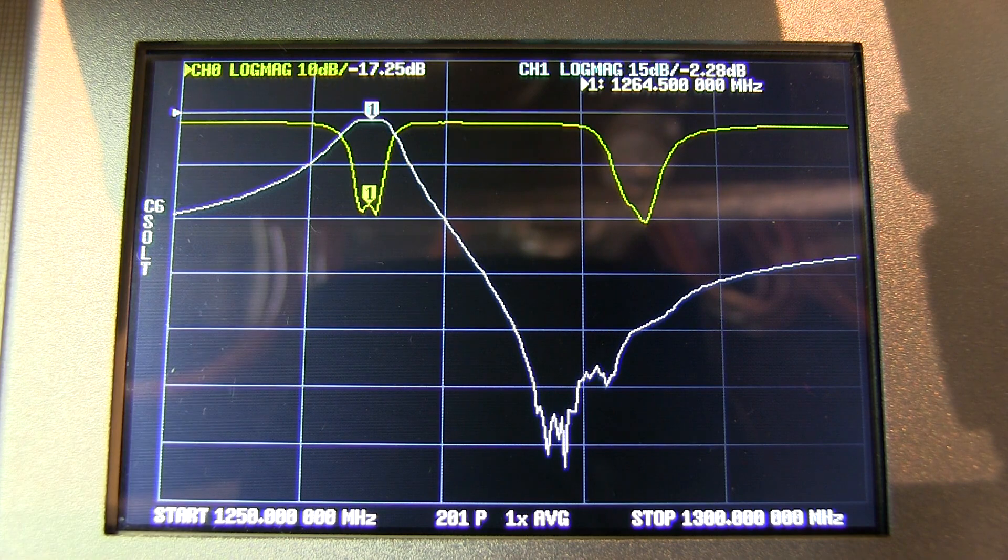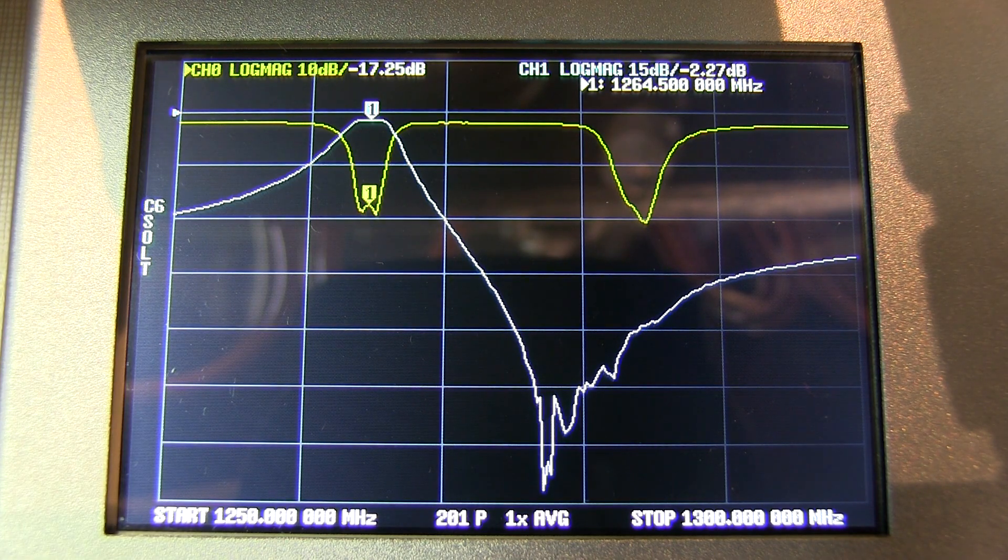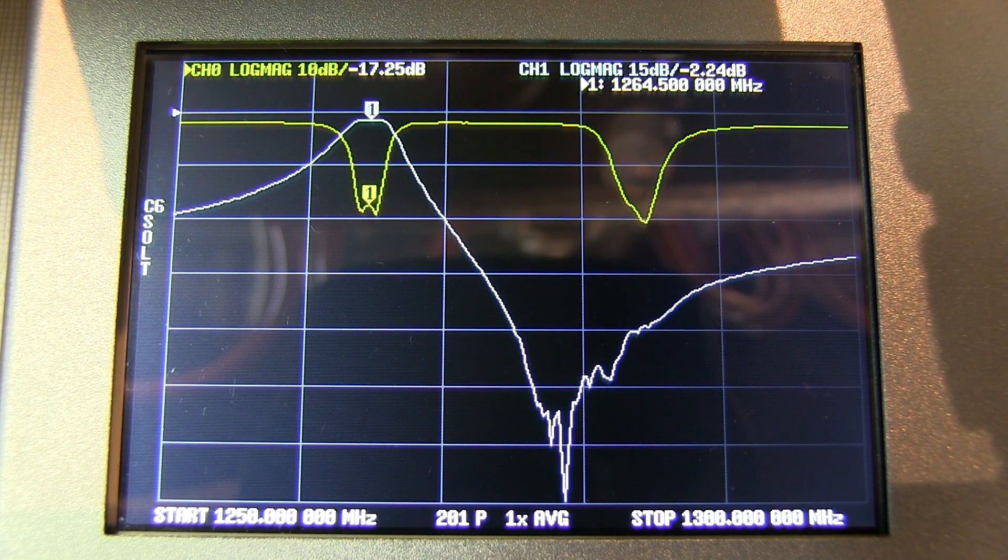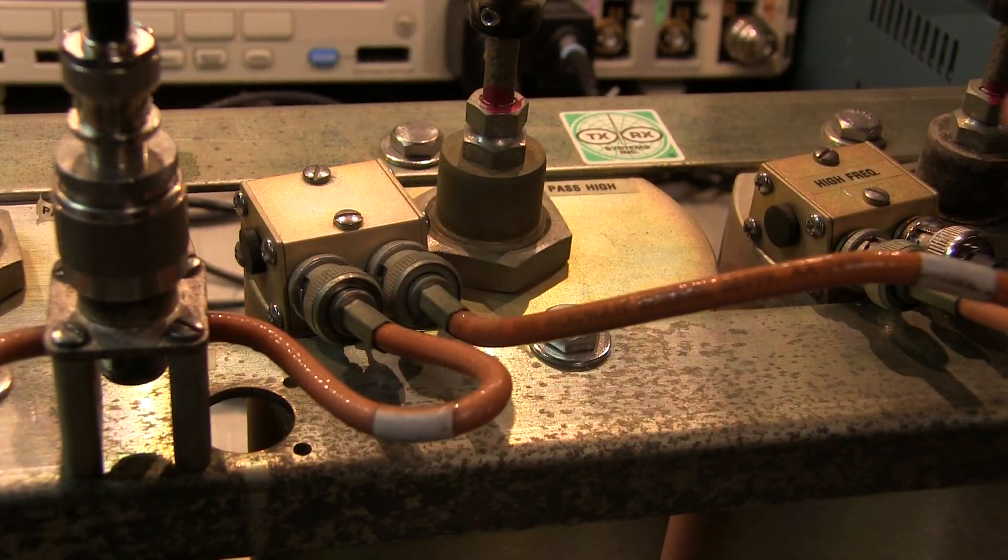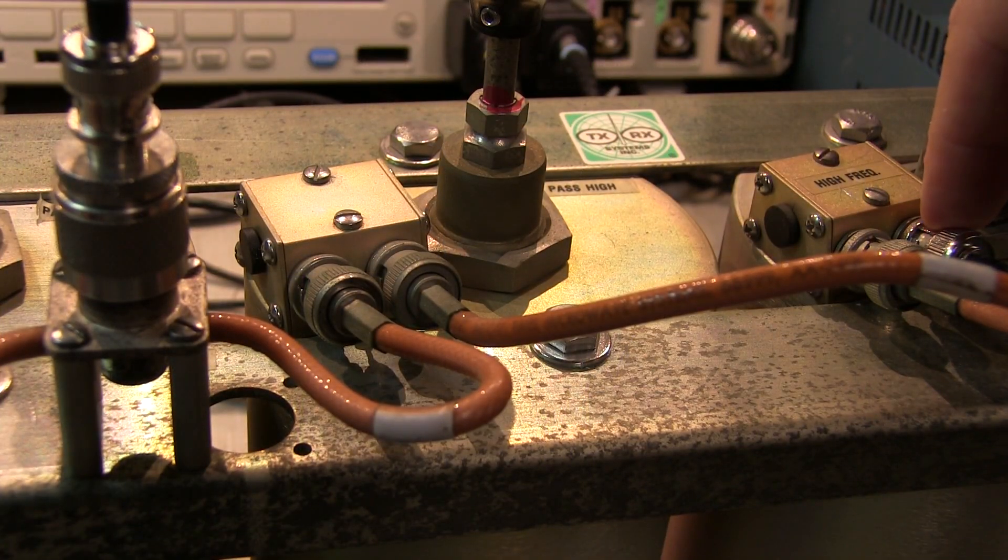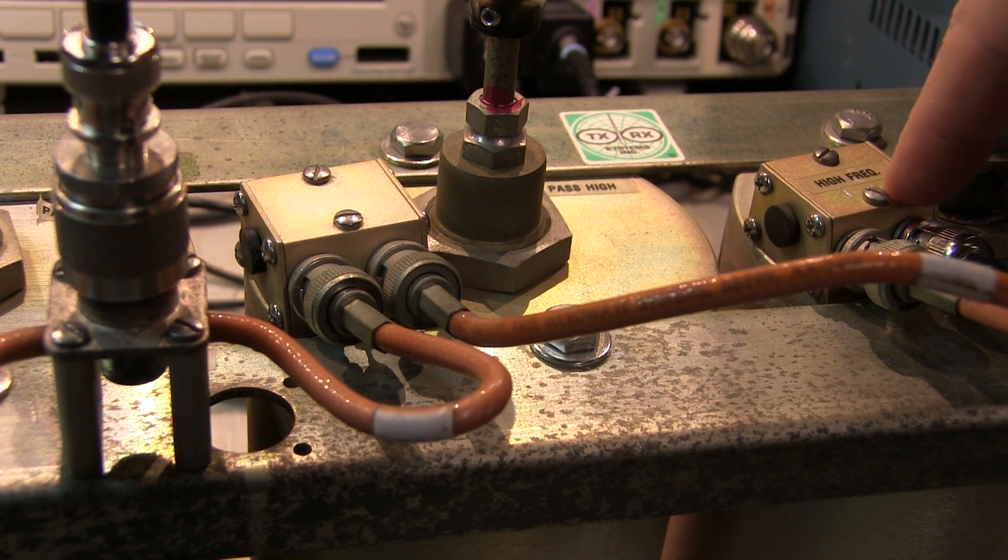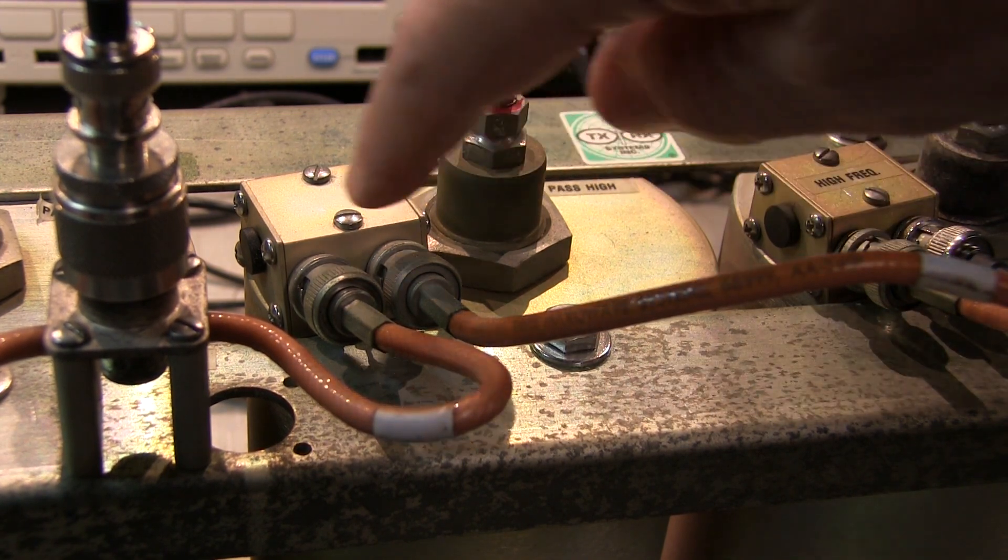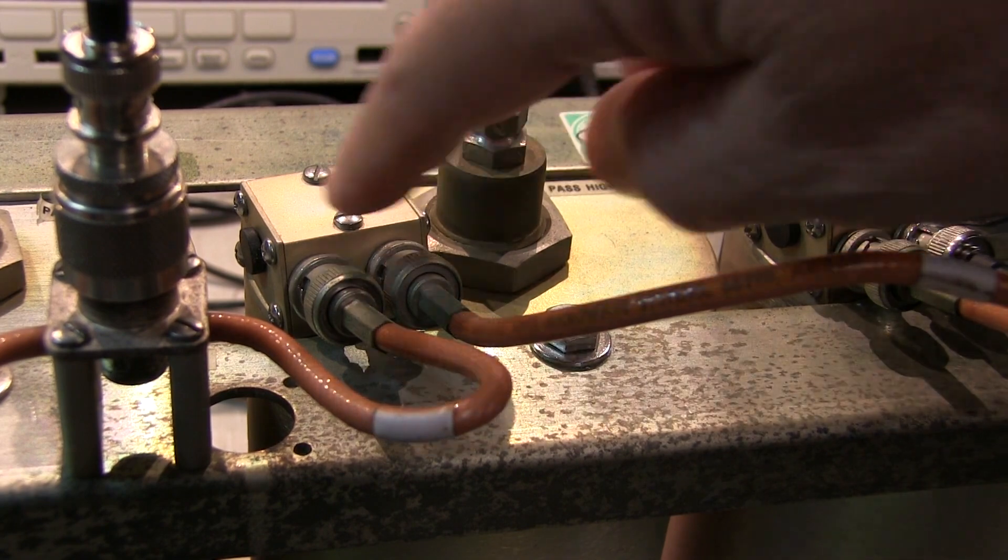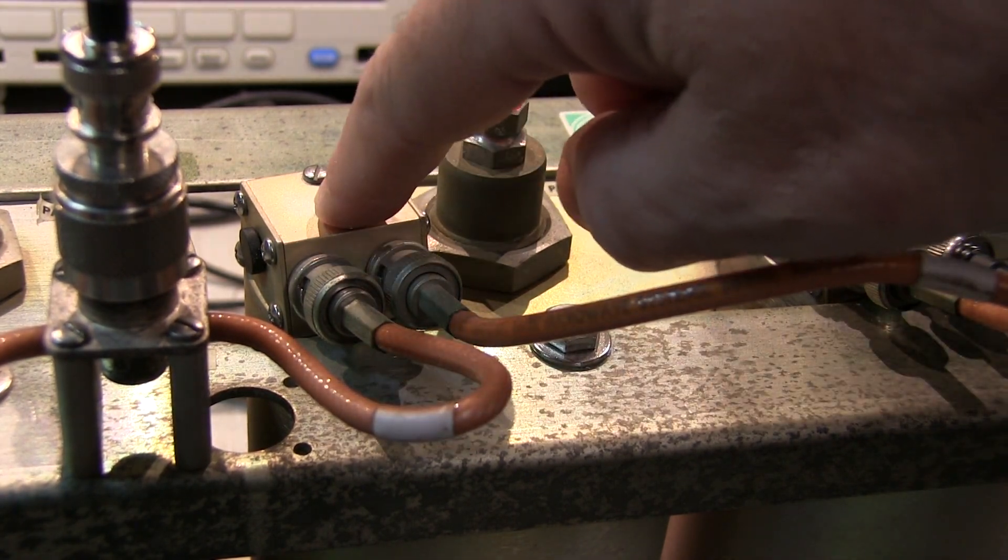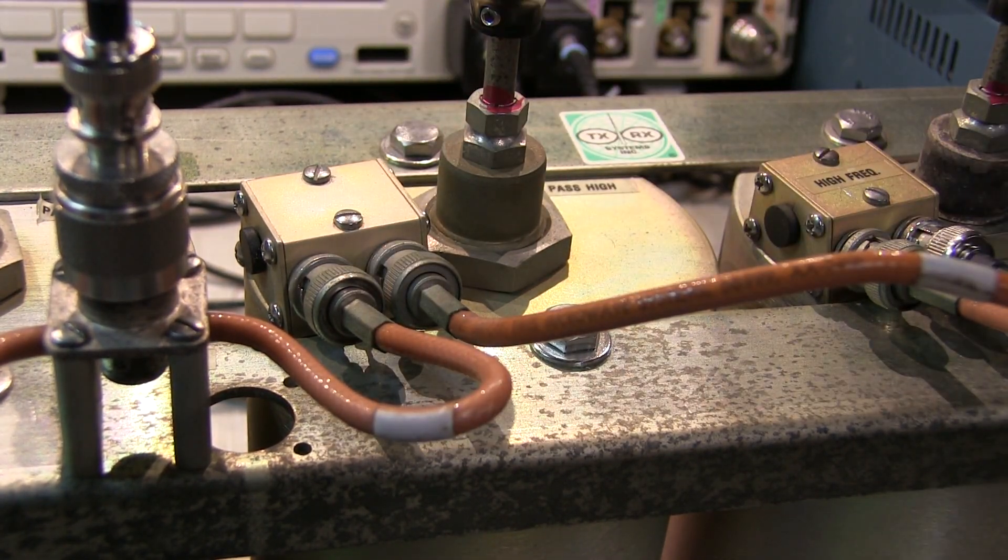That's not looking too bad. I think we're pretty close with that filter. I'm going to lock those nuts down and concentrate on looking at the notch filters. I've moved the receive port of the VNA over to the transmit side. We'll pull out these rubber plugs and adjust each notch filter to move that notch down to 1264.5.